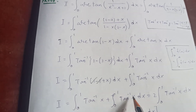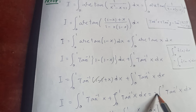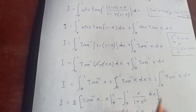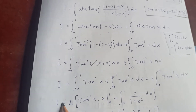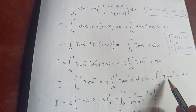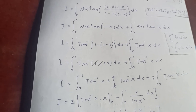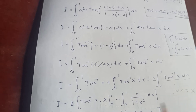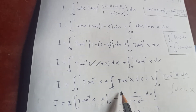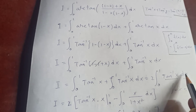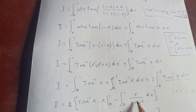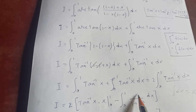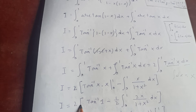Taking I equals 2 times the integral from 0 to 1 of arctan(x) dx, we apply integration by parts. The first function is arctan(x) and the second is dx, so the integral of dx is x. We get: x times arctan(x) evaluated from 0 to 1, minus the integral from 0 to 1 of x over (1 plus x squared) dx, since the derivative of arctan(x) is 1 over (1 plus x squared).